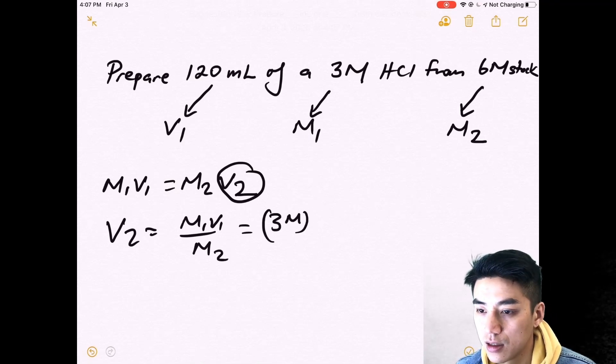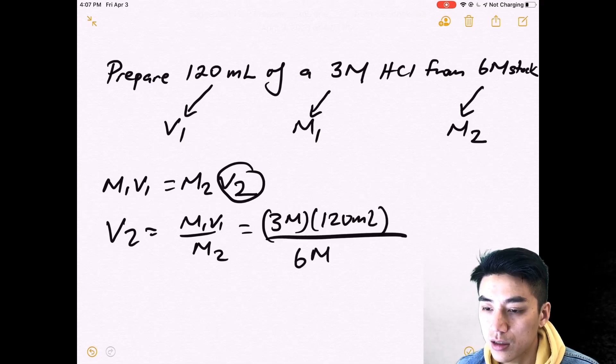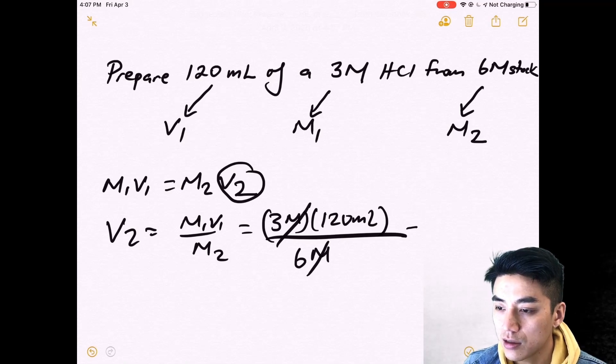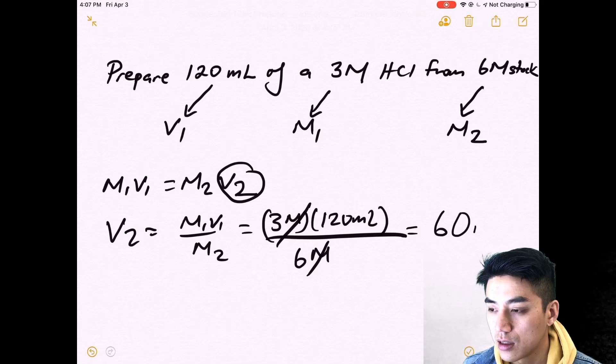Plug in your values. Plug in your M1. Plug in your first volume. Plug in your second molarity. Cancel out your units. Okay, find a calculator. Find out what this is. Should be 60 milliliters. That's how much of the stock I need.